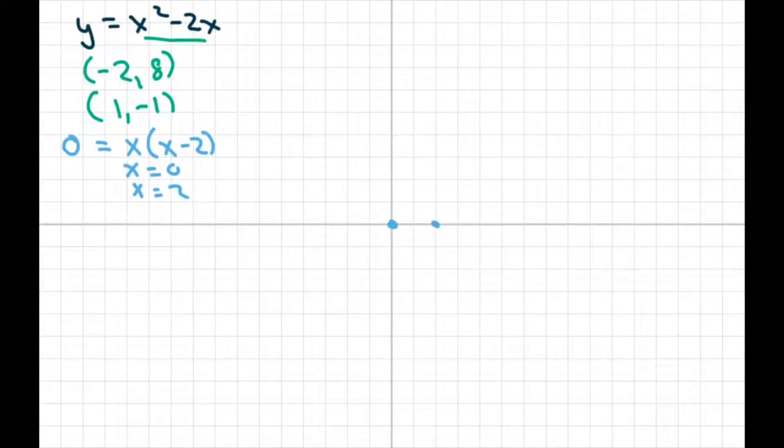Now I'm going to go ahead and also plot these two points. Negative 2 maps to 8. So this is negative 2. So we go 1, 2, 3, 4, 6, 7, 8 right there. And 1 maps to negative 1. So there it is. And a big jump in here. So let's go up to here and go up to 8 here as well. So I'm going to sketch this as best I can on here.